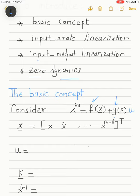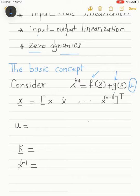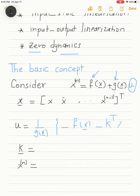This is an nth order differential equation where f and g are nonlinearities and u appears linearly. The vector x is composed of x, x-dot, up to the (n−1)th derivative of x. To linearize this equation, I take u equal to 1 over g of x — which cancels the nonlinearity g — then subtract the nonlinearity f, and finally introduce a state feedback control k-transpose x.